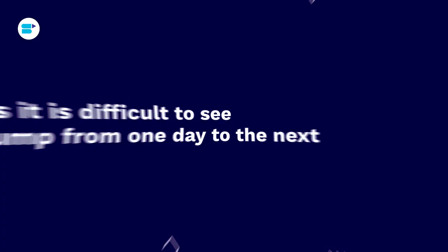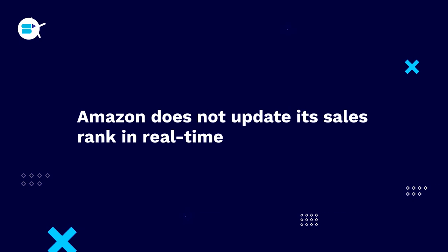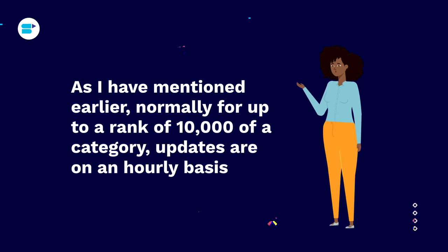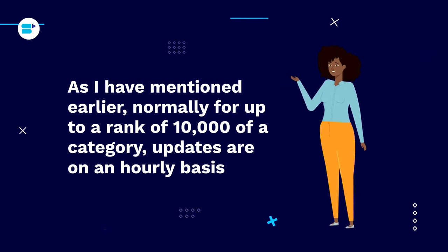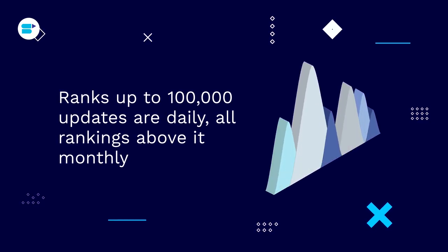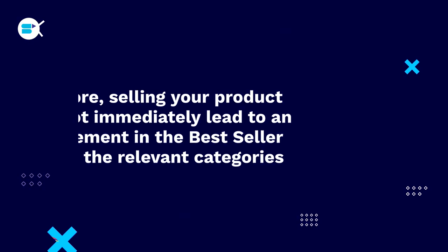You may wonder why your BSR keeps jumping back and forth. Let's understand this with a quick animation. Amazon does not update sales rank in real time. For products up to rank 10,000 in a category, updates are done on an hourly basis. Ranks up to 100,000 are updated daily, and all rankings above that are updated monthly.